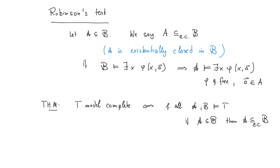The test for model completeness is then: if T is a theory, then T is model complete if and only if for all models A, B of T, if A is a substructure of B, then A is existentially closed in B. So this is a little bit simpler than the full elementary substructure requirement. In the literature, you can find 'existentially closed' also referred to with the symbol ∃₁ for existential, or sometimes also as S for simply closed.